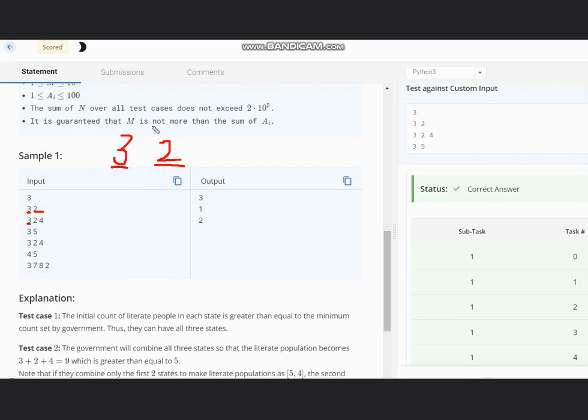So for the first test case we see 3 so 3 is greater than 2, so minimum we require 2 but there are 3 literate people. So we have 2 literate people and minimum required are 2 so this state can be included separately so the count becomes 2 and in case of 4 also the count can be increased so the count becomes 3. So our answer becomes 3 in this case.